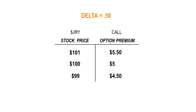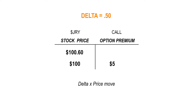Again, the delta tells me how much the value of my option will change for every $1 move of the underlying stock. But what if the stock price moves only $0.60, not the whole dollar? How do I calculate that? Well, the math is simple — all I need to do is multiply the delta by however much the price moved. So in this case, it would be the $0.50 delta times the $0.60 move in price, which equals $0.30. So my call value would go up from $5 to $5.30.